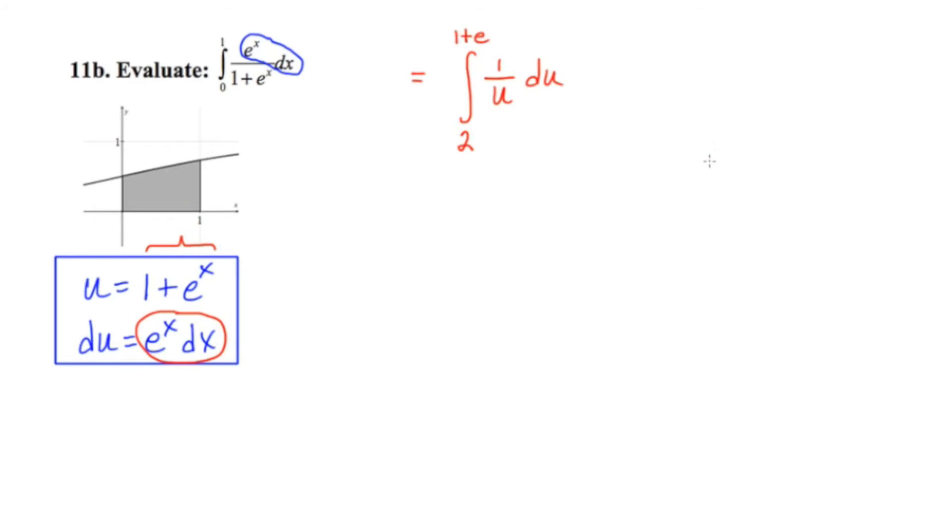Okay, so this is an older integration rule, older by only a few lessons, but it's not exactly what we're working on currently. You might recall that when we're integrating 1 over u, the antiderivative is the natural log of the absolute value of u plus c.